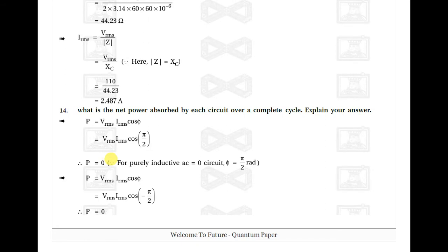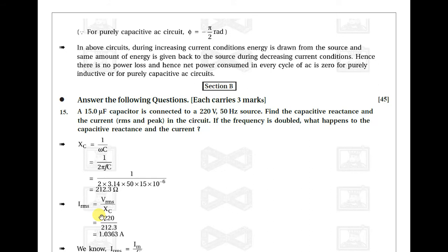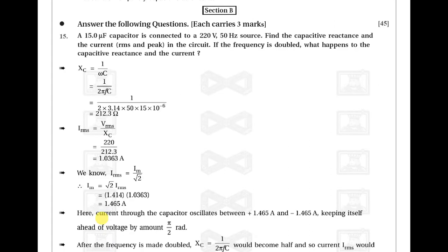Example fourteen: the net power absorbed by a circuit over a complete cycle. P = Vrms × Irms × cos φ. For a purely capacitive circuit, φ = −π/2, so cos φ = 0, and net power P = 0. Similarly for purely inductive circuits, φ = π/2 and power is zero.